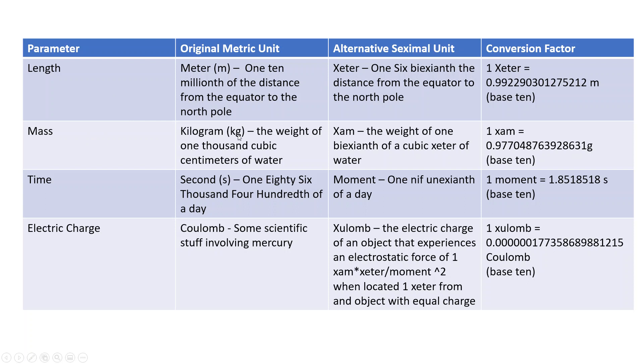So, the original definition of the kilogram, or the original thought behind it, is that a kilogram would be the weight of 1,000 cubic centimeters of water. I've come up with a unit here. For now, I'm calling it the zam. So, instead of the gram, I'm calling it the zam. I know. I can't really come up with better ideas. And that is equal to the weight of 1 biexianth of a cubic zeter of water. Zeter being defined up here. And if you do that, then a zam turns out to be this number here, very close to a gram.